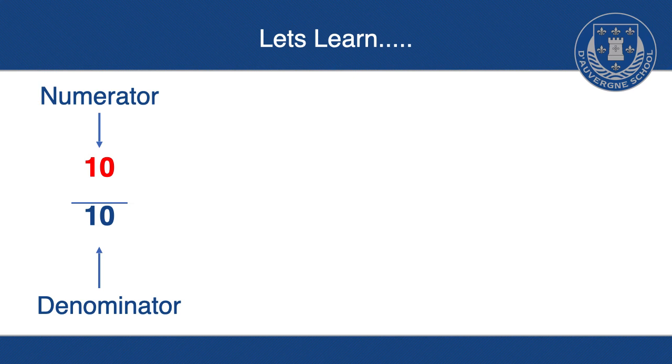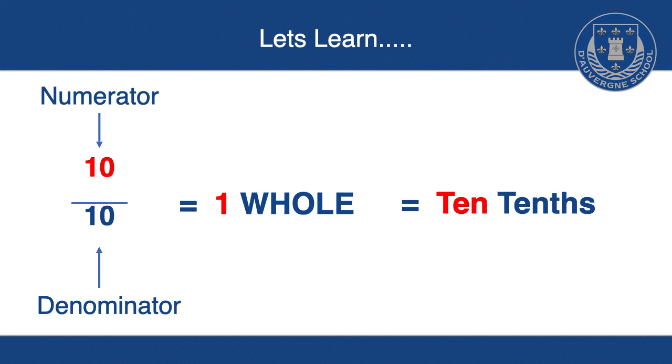So if we thought about Elliot, he had one part of that chocolate bar, so he had one-tenth. Ten-tenths is the same as one whole, and it's the same as saying it in words, ten-tenths. So there's different ways we can write a fraction. You can write it in numbers, or you could write it as the word, so ten-tenths. And when it's whole, that means all the parts are there, so it's one whole.